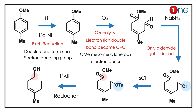Next, you are doing ozonolysis. The important thing is that ozonolysis happens at the electron-rich carbon where the double bond near OMe is present. You have ring opening — the double bond becomes two carbonyl (C=O) groups.